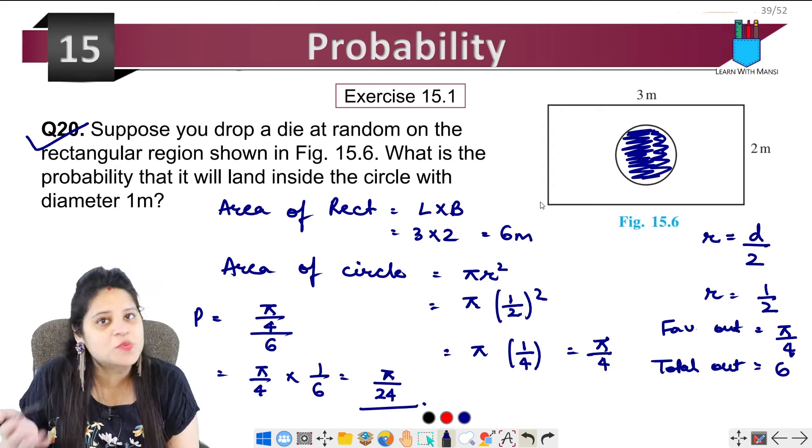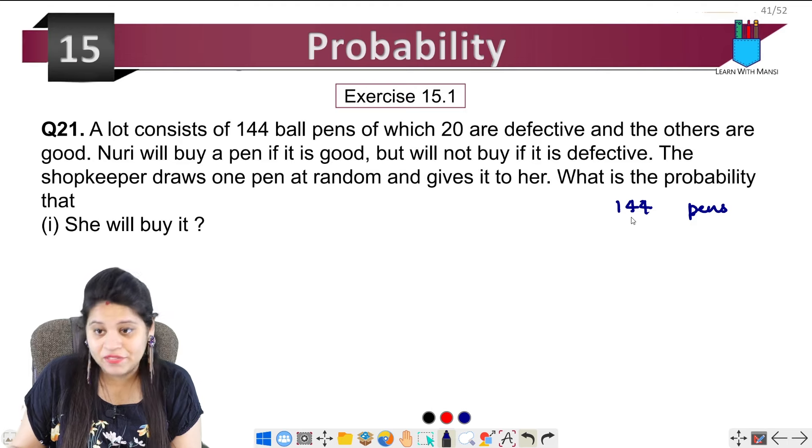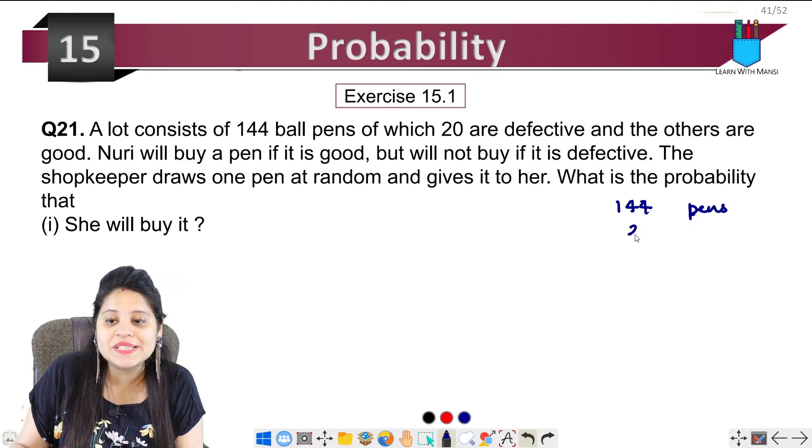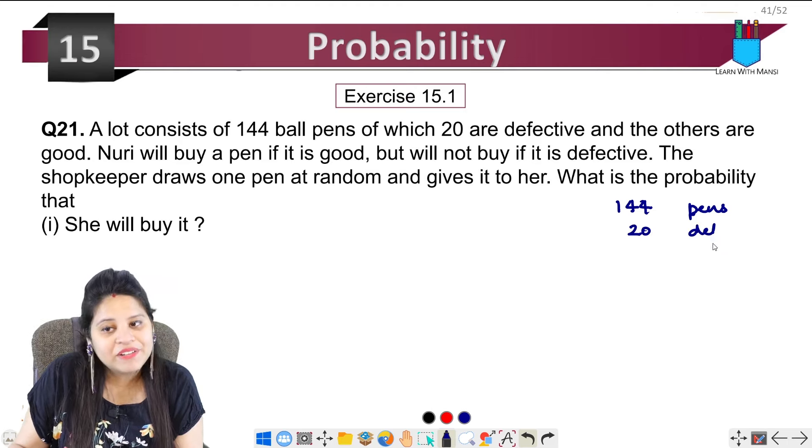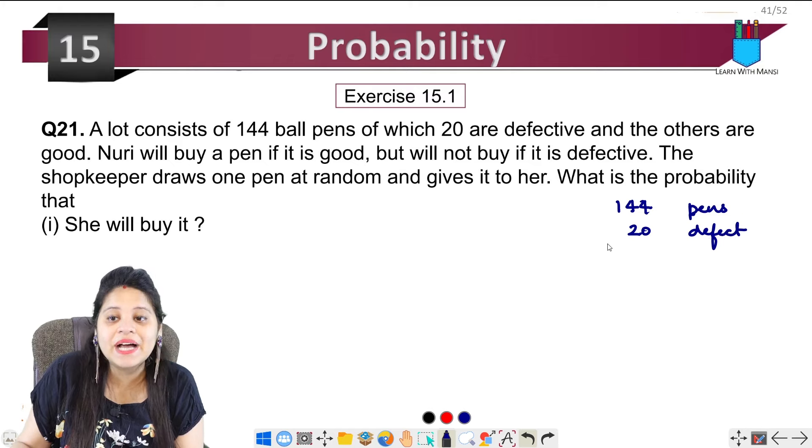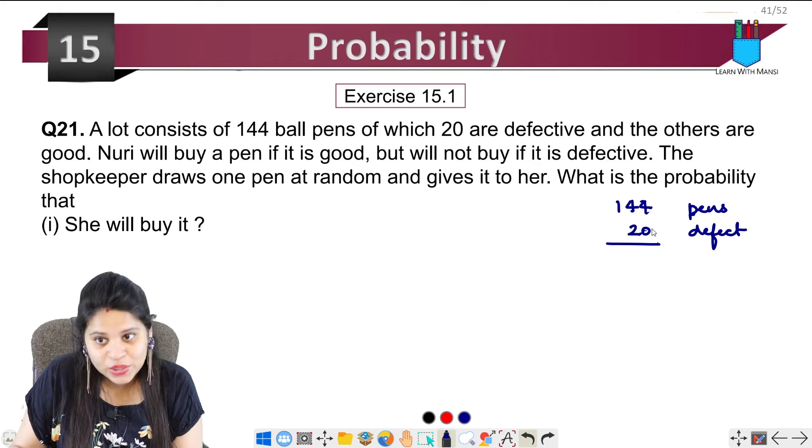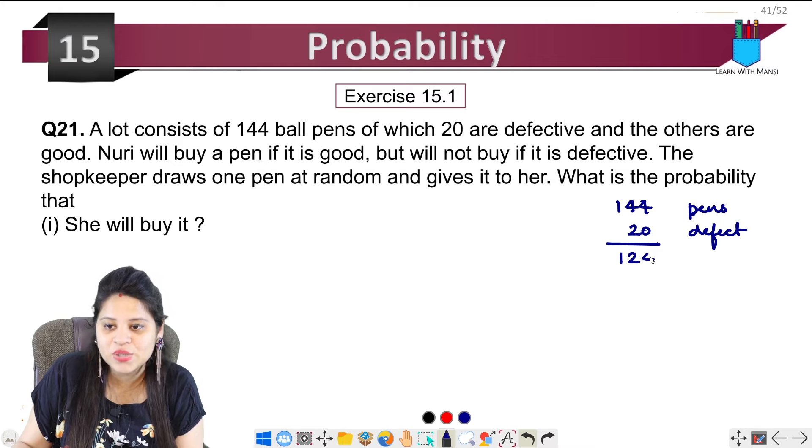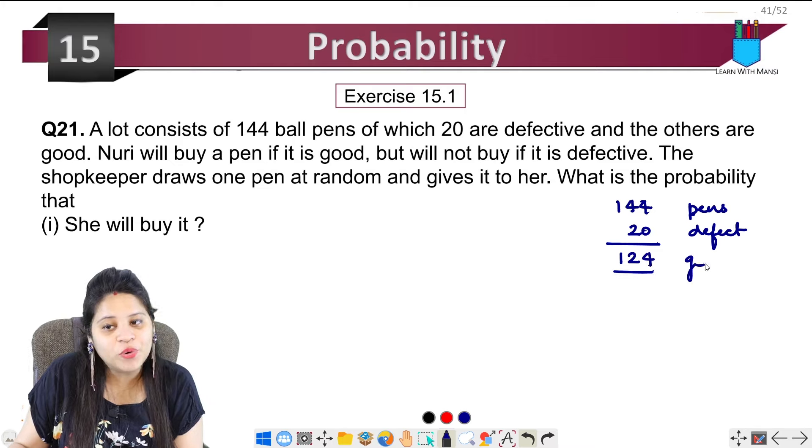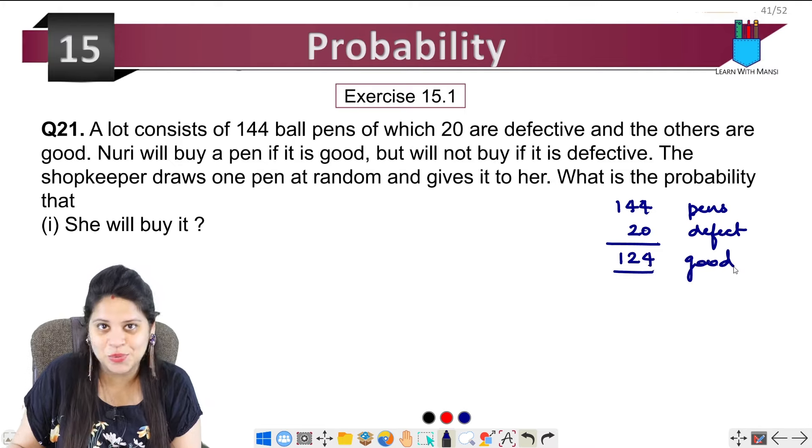Next question number 21 says: A lot consists of 144 ball pens, of which 20 are defective. If 144 total and 20 are defective, that means 144 minus 20 equals 124 pens are good.